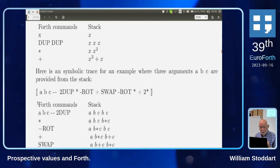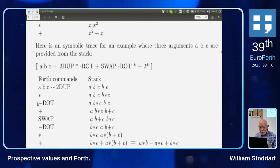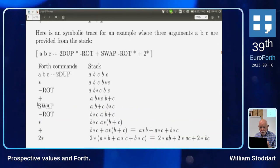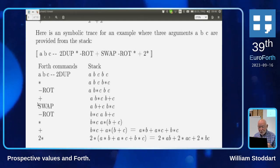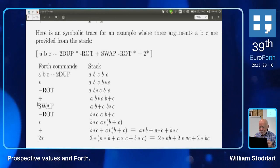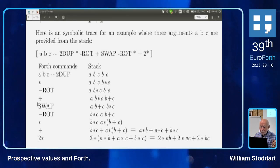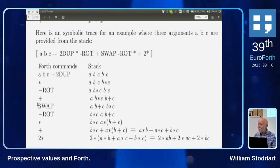Here's a rather extreme stack trace showing you can do quite a lot with a stack. This is a sort of Forth brain-teaser: you start with a, b, and c on the stack and must end up with 2ac + 2ab + 2bc — and it can be done just with stack operations.